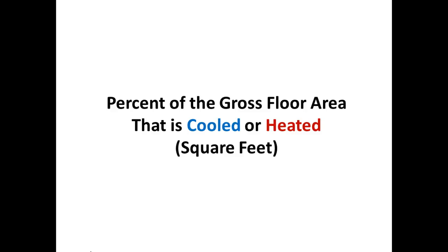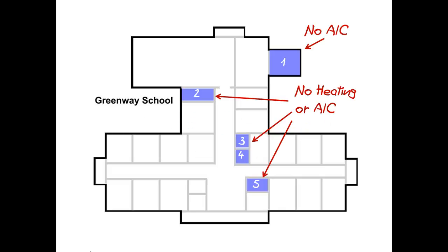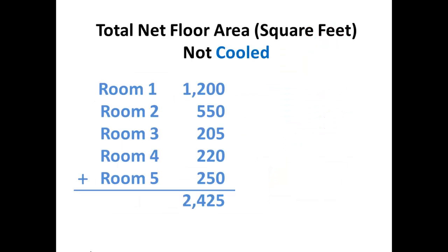The next thing we're going to look at is what percent of the gross floor area is cooled or heated. We have to go back and look at individual rooms. You may need some help here because these areas are usually going to be locked — mechanical rooms, electrical rooms, or storage rooms. You may have to get the custodian or maintenance technician to unlock the door. In this case, we're going to measure the inside dimensions of each space and tally those up.